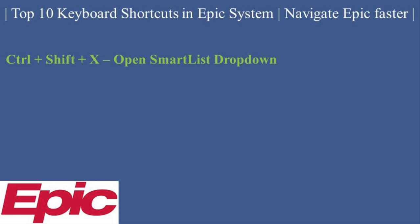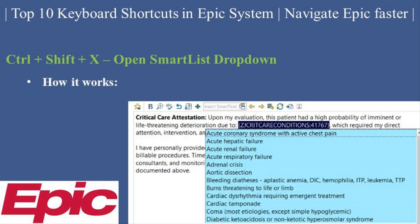Ctrl plus Shift plus X — Open Smart List Drop-down. This shortcut is used to open drop-down lists within documentation fields. How it works: if your documentation requires choosing from a smart list, this shortcut opens the options without a mouse. Example: select diagnoses or medication options directly using this command.